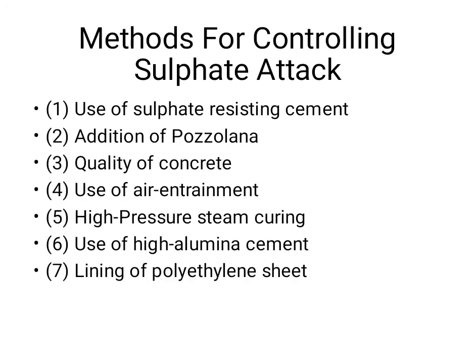Methods for controlling sulfate attack: first, use of sulfate-resisting cement (SRC). Second, addition of pozzolana — just as with alkali aggregate and alkali silica reaction, adding pozzolana to concrete can stop sulfate attack. Third, improve quality of concrete. Fourth, use of air entrainment and high-pressure steam curing. Fifth, use of high alumina cement. Sixth, lining with polyethylene sheets.